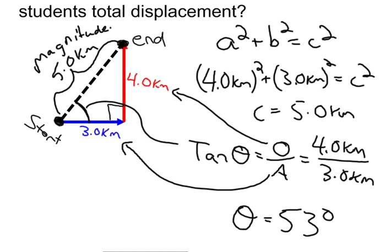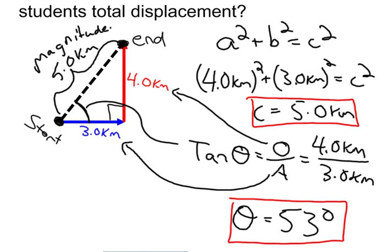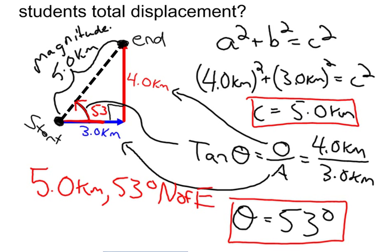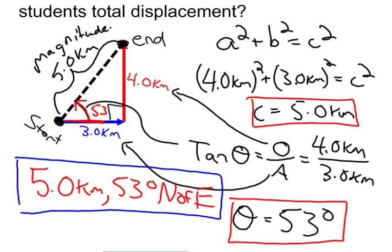So we have both our magnitude, 5.0 kilometers. We have our direction, which is 53 degrees. And we'll state our final answer right here as 5.0 kilometers. And it's 53 degrees. And that 53 degrees in here is measured from east towards the north. So we say that is north of east. So there's our final answer for the displacement of the student after they walk 3 kilometers to the east, 4 kilometers to the north.